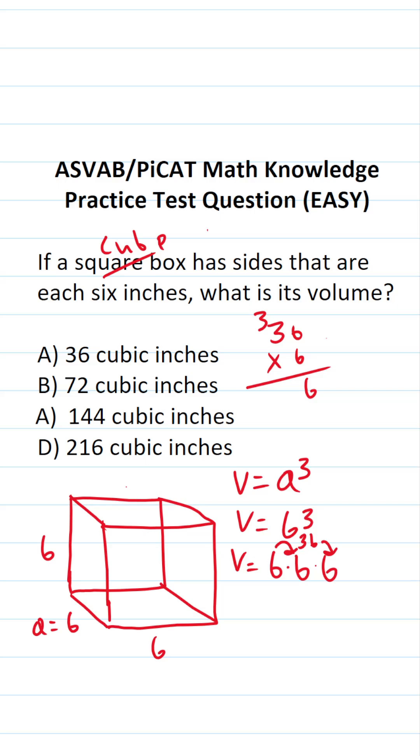Three times six is 18, 19, 20, 21. So we can see the volume of this square box, otherwise known as a cube, is going to be 216 cubic inches. The answer to this one is D.